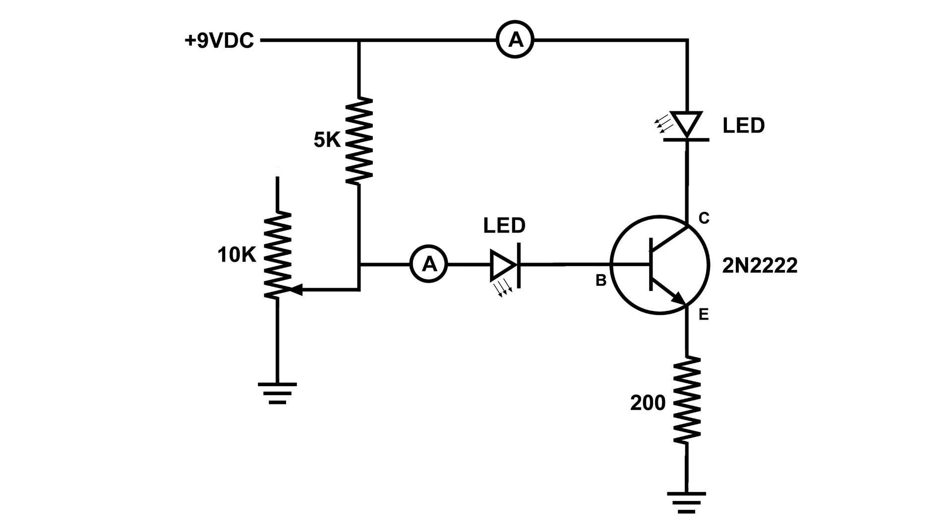Now, when I started to turn the variable resistor and that pointer is moving upwards, you could see that that LED started to light, and I had actually pretty good control over the brightness of that LED.